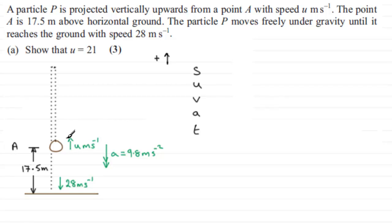We're starting from A. This is our initial starting point. When the particle travels from here up to the very top, it's going to come to instantaneous rest and then come all the way back down to 28 meters per second. That'll be its final velocity.